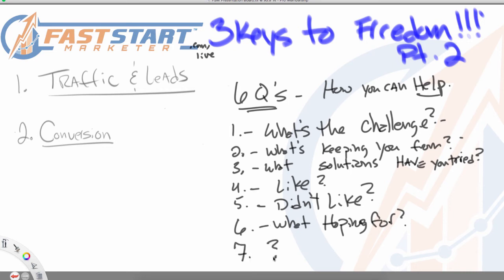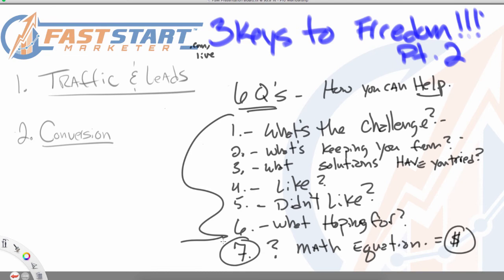There is a seventh question I'm going to give to you live on the webinar. You got to be there live to get it. This question is a math equation. It's a math equation that will literally solve all of your money woes. Asking this one question after you follow these steps, and then you ask the seventh question. It literally is a math equation that will solve every money woe you have ever experienced. How can you get this question? It's very simple. All you have to do is register below.